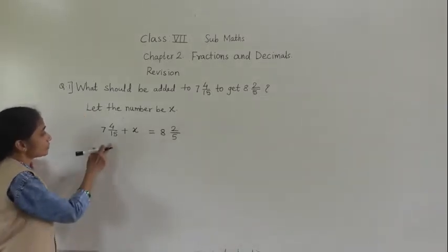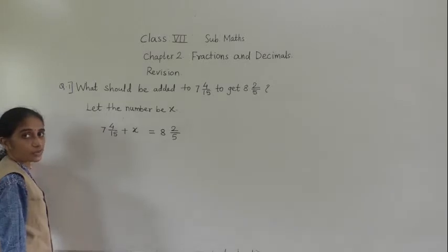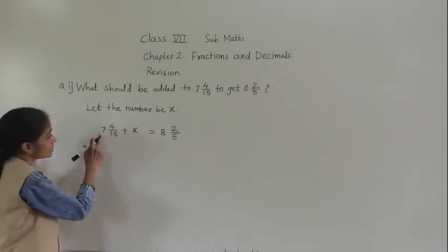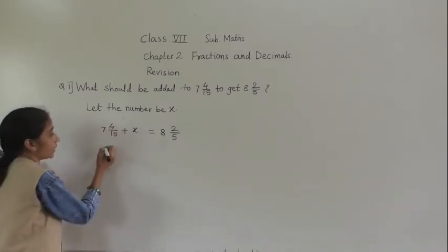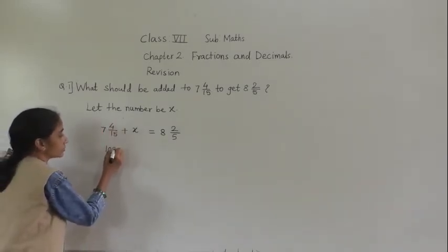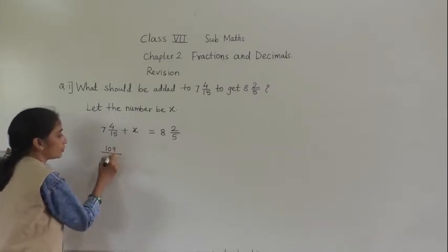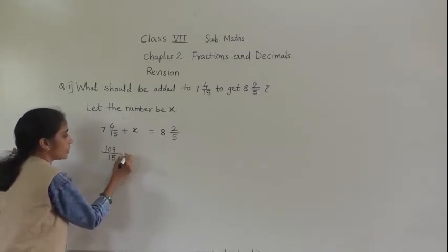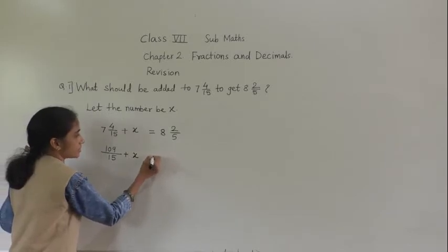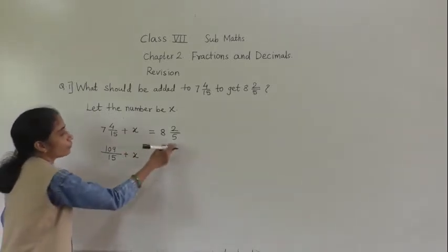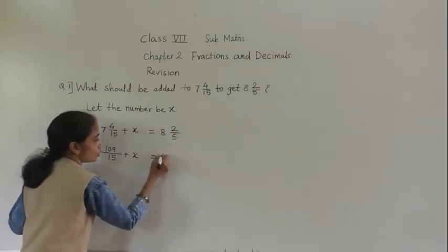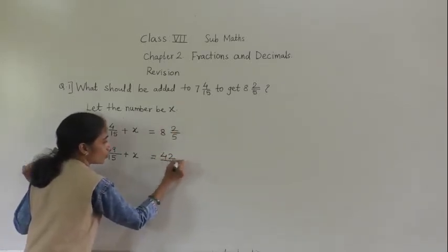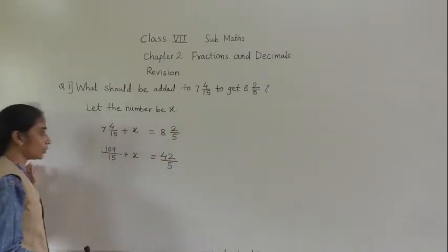Now solve: 15 sevens are 105, plus 4 is 109. So 109 upon 15 plus x is equal to — now 5 eights are 40, plus 2 is 42. So 42 upon 5.